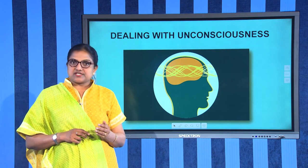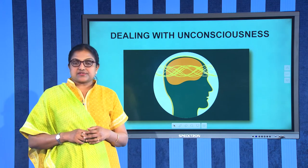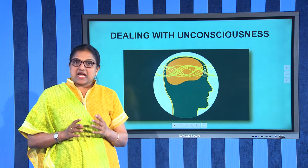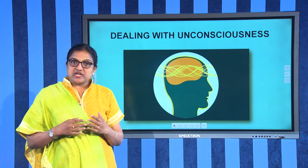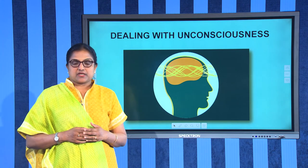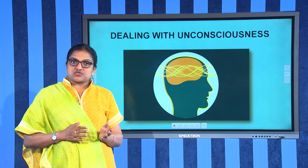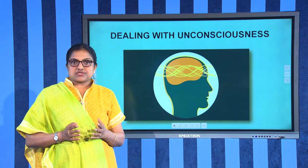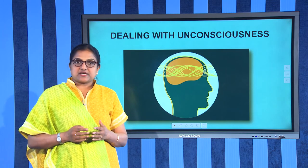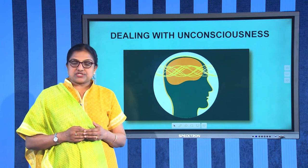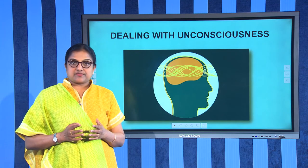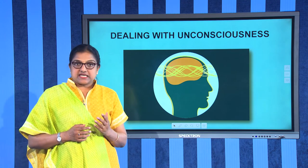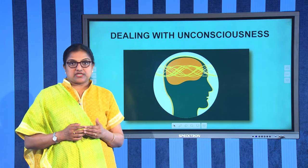Once the child is breathing, check for signs of serious injury and control any serious bleeding. Place the child in the recovery position — this keeps the airway open and lets vomit or saliva drain from the mouth. Unconsciousness can develop gradually or suddenly from injury or illness. Common causes include head injury, lack of blood supply to the brain, lack of oxygen, poisoning, diabetes, heat stroke, hypothermia, or epilepsy.